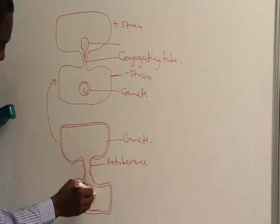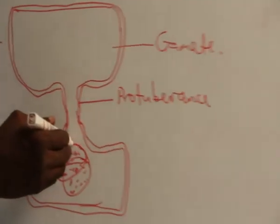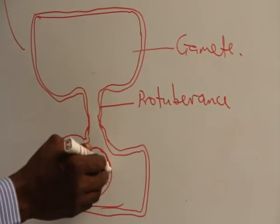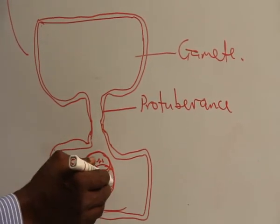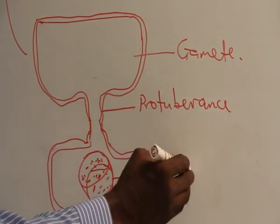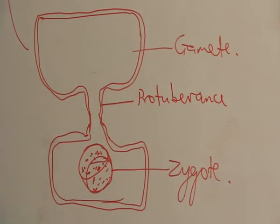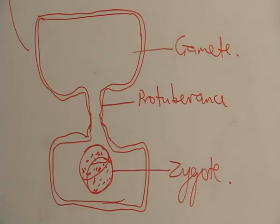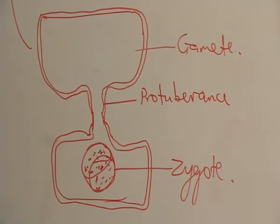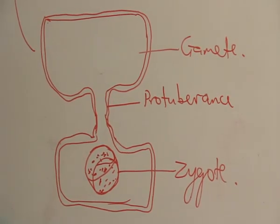But it is only the new zygote that will now be here. This is now zygote. The zygote will now form a thick wall around itself to be called zygospore.